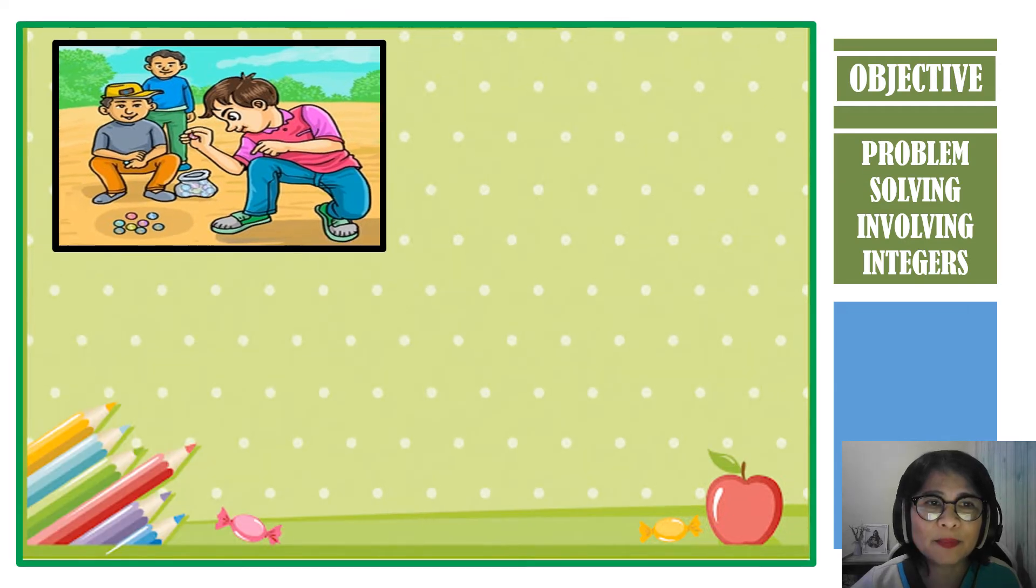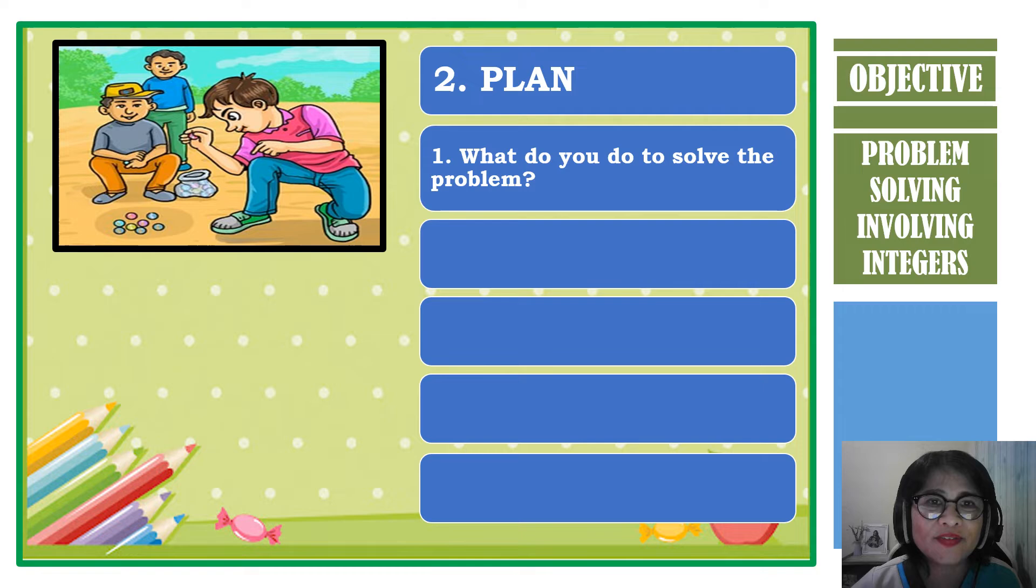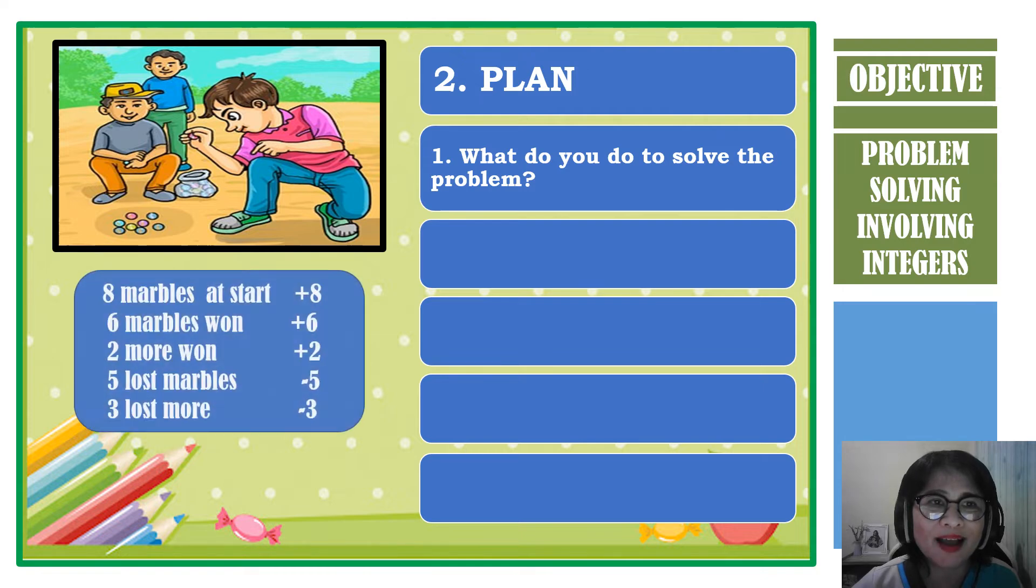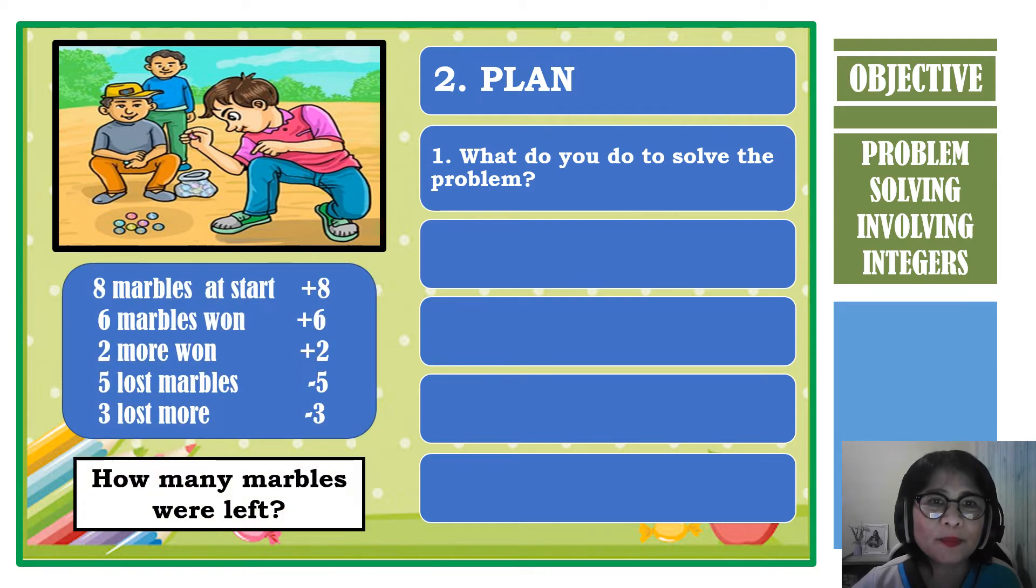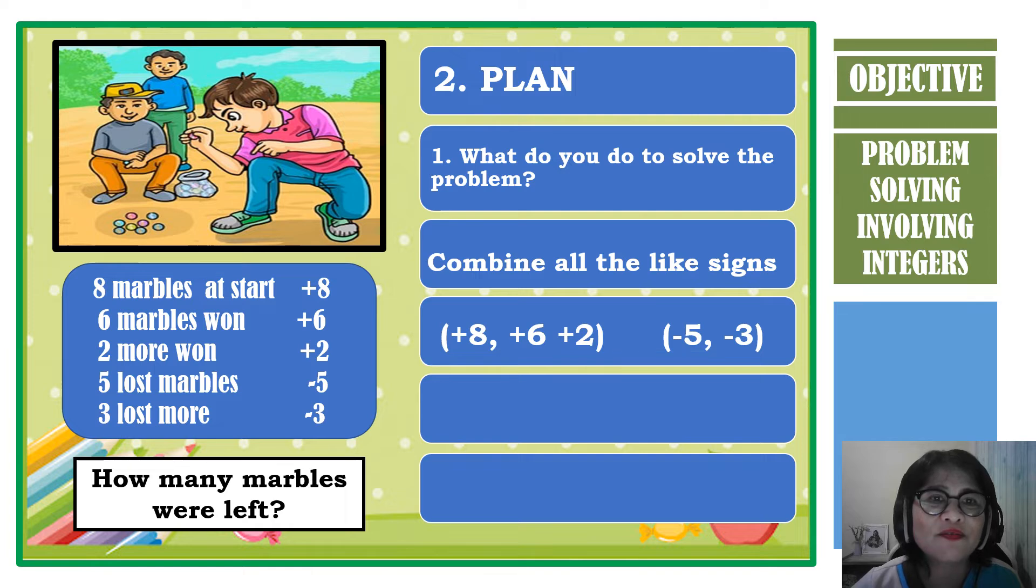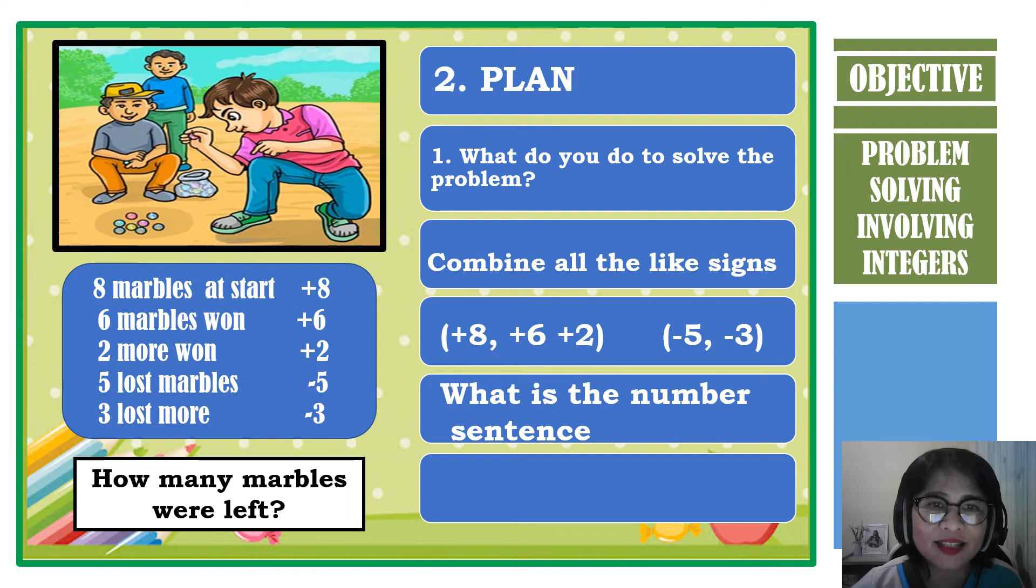Let us now plan what to do. Using the given data and the problem asked, first we are going to combine all the like signs. For the won game, we have 8, 6, and 2. And then the lost game, we have negative 5 and negative 3. With the given numbers, we can make a number sentence out of it. So our number sentence is 8 plus 6 plus 2 plus negative 5 plus negative 3.